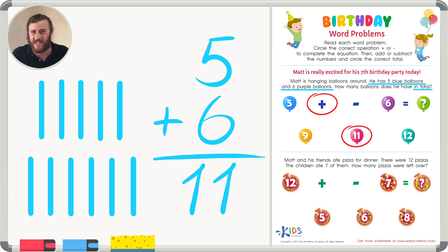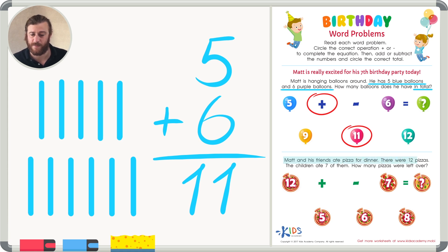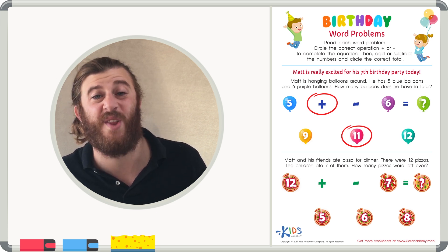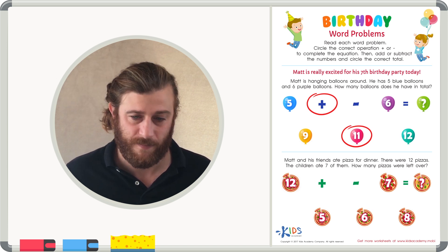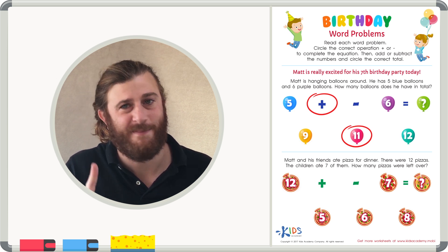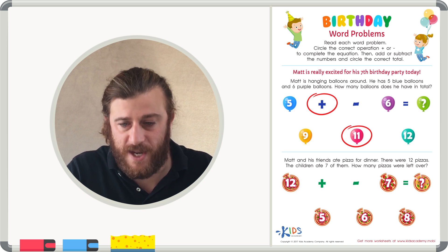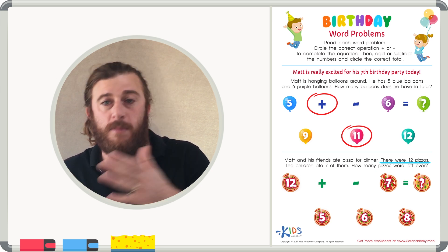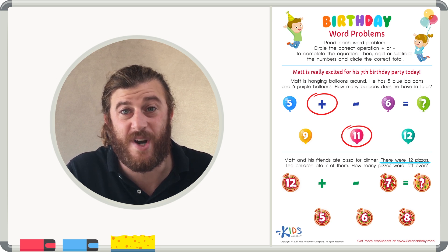Let's read the next problem just as carefully and see if it wants us to add or subtract. At the very same birthday party, Matt and his friends ate pizza for dinner. There were twelve pizzas. The children ate seven of them. How many pizzas were left over? We read the whole problem. Now let's back up, re-read it, and underline the important information — of course, we'll draw the pizzas, though unfortunately we can't eat them. There were twelve pizzas — that sounds like a fact, and it doesn't sound like we're getting any more.